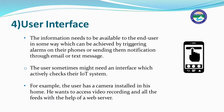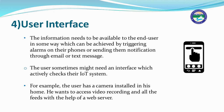Fourth is user interface: the information needs to be available to the end user, which can be achieved by triggering alarms on their phones or sending notifications through emails or text messages. The user sometimes may need an interface to actively check their IoT system — for example, a user with a camera installed at home can access video recordings and feeds through a web server. These days, IoT-based cameras are installed in homes and users can access those cameras or their recordings remotely.